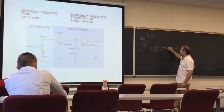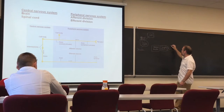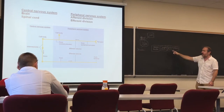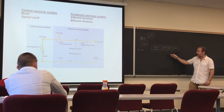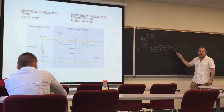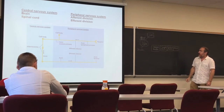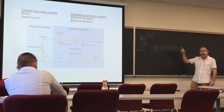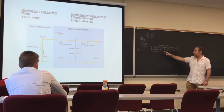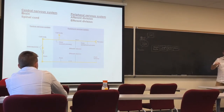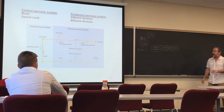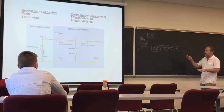This doesn't mean that the central nervous system can only send signals to one of them — usually a response involves a combination of those. And depending on which effector the central nervous system wants to activate, we're going to use different pathways.